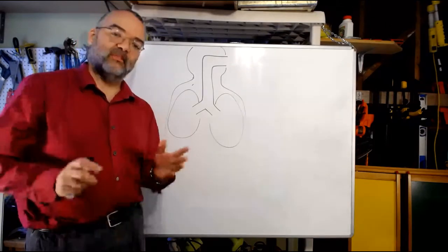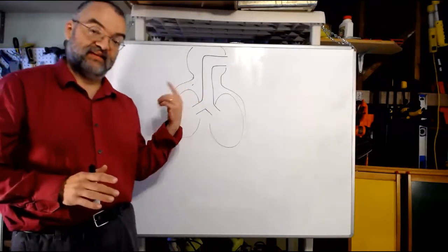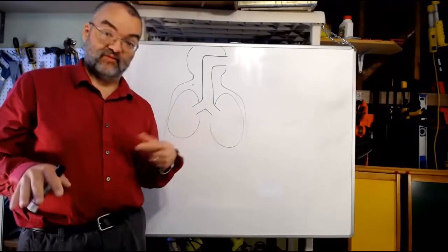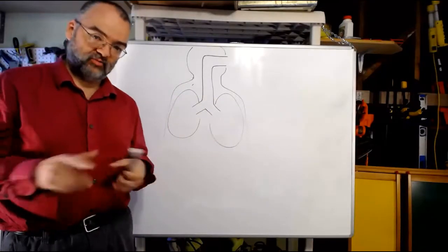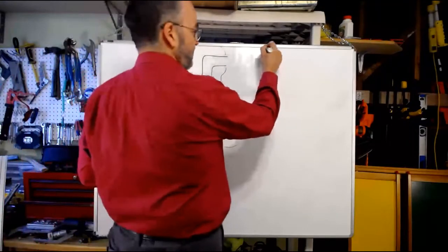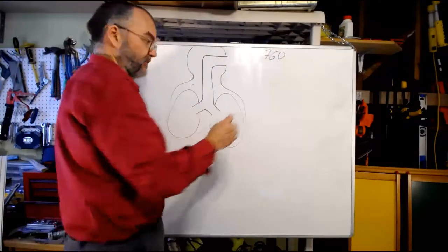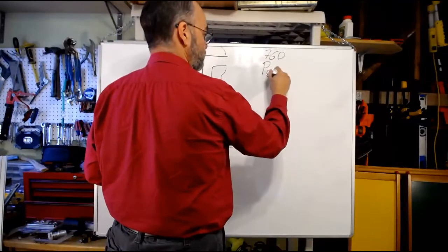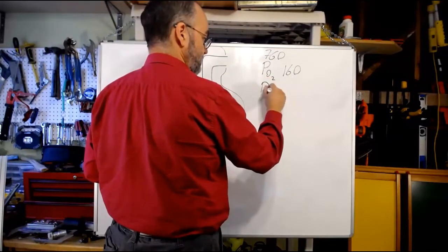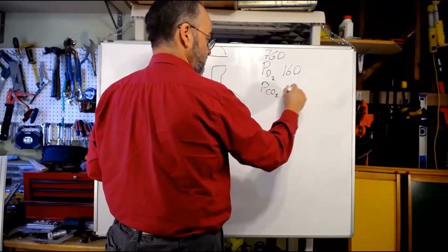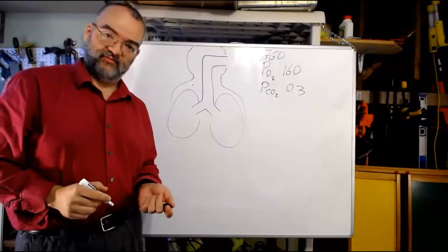Let's talk about partial pressures in the outside air, then in the alveoli, and eventually in the blood. As you learned in the partial pressure lecture, if we're at sea level with a total pressure of 760 millimeters of mercury, the pO2 out here is about 160 and the pCO2 is about 0.3 millimeters of mercury.